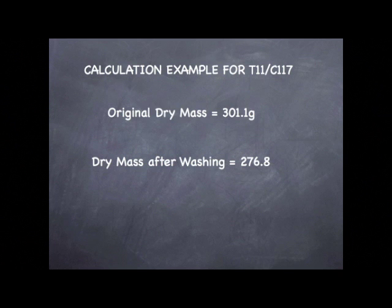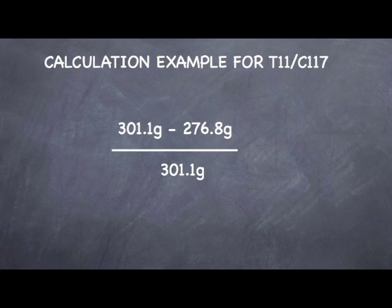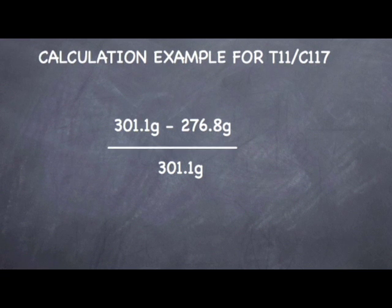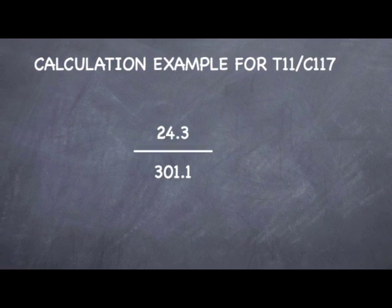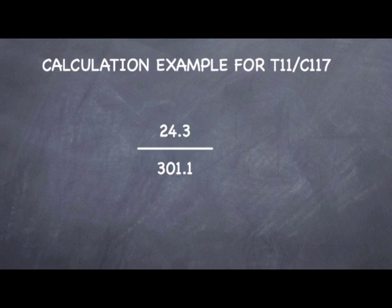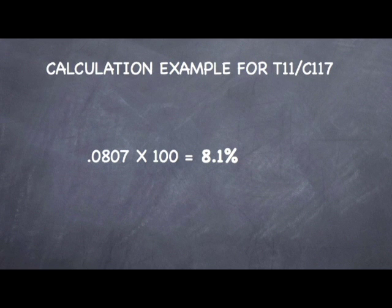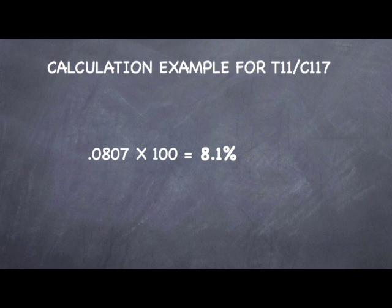Let's do an example. Assume that the original dry mass of our sample was 301.1 grams, and after washing, the dry mass of our sample was 276.8 grams. Plugging our numbers into the equation: 301.1 grams minus 276.8 grams, divided by the original dry weight of 301.1 grams, gives us 24.3 grams divided by 301.1 grams, which equals 0.0807. Multiplying by 100, we get 8.1% materials finer than the 75 micron sieve.